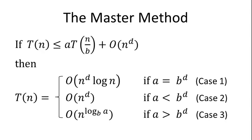The recurrence has the form T(N) — the running time on input of size N — is no more than A times T(N/B), because the input size of a subproblem is N over B, plus O(N^D), the work outside of the recursive calls. There's also a base case: once the problem size drops below a particular constant, there should be no more recursion and you can solve the problem immediately, in constant time.